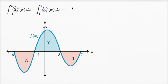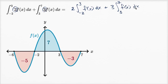So this is going to be the same thing as two times the definite integral from negative two to three of f of x dx, plus three times the integral from three to seven of f of x dx. The definite integral from negative two to three of f of x dx is the area between y equals f of x and the x-axis between x equals negative two and x equals three, which they give us as seven.